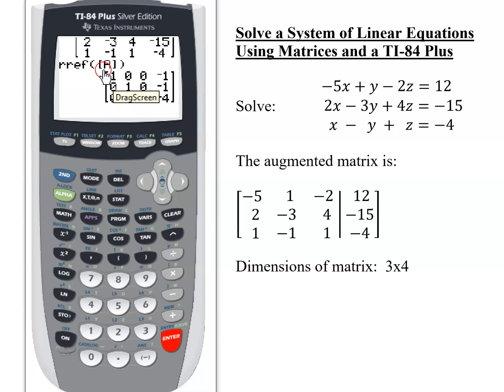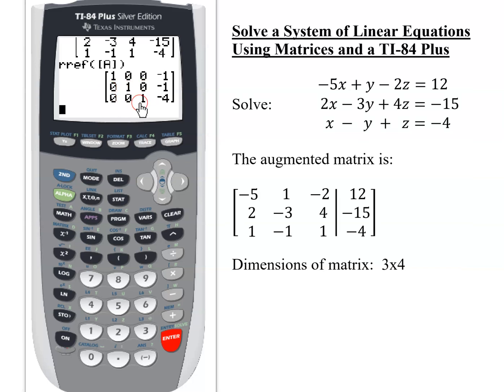And reduced row echelon form, if there is a solution, it will operate on the matrix to get ones on the diagonal, zeros below it, zeros above it. But don't just assume that there is a solution. If there is no solution or infinite number of solutions, you'd get 0, 0, 0 either in this row or this row. So it's important to check that you have 1 on every element of the diagonal, zeros below it, zeros above it. Great. In this case, there is a solution.